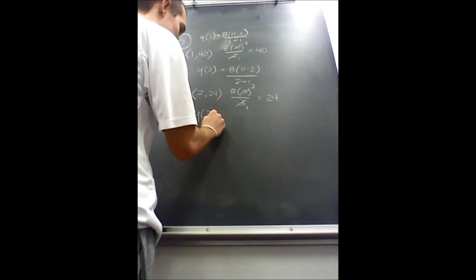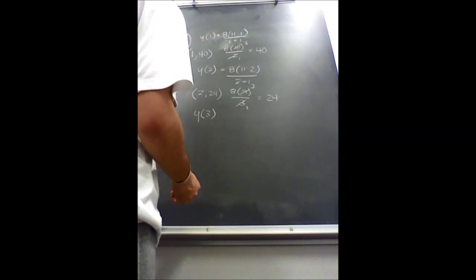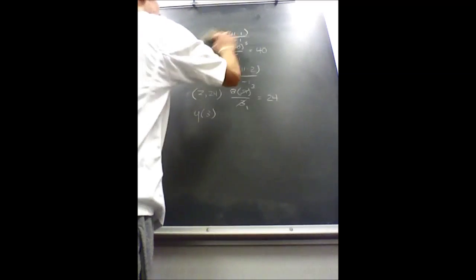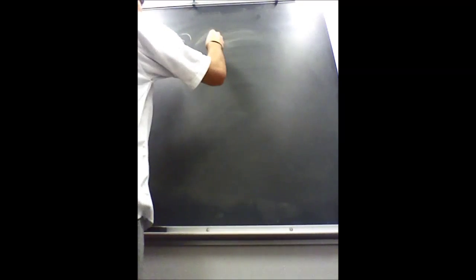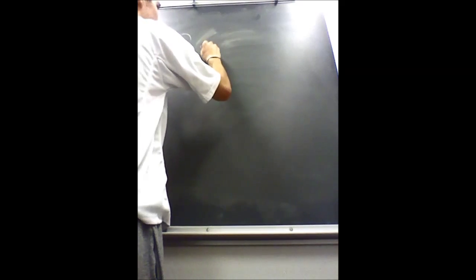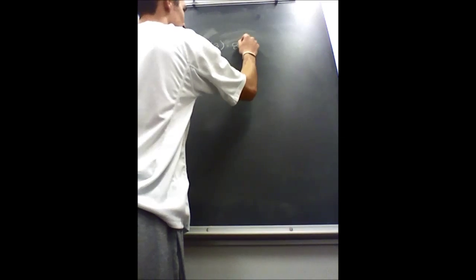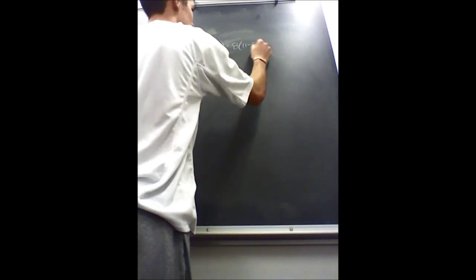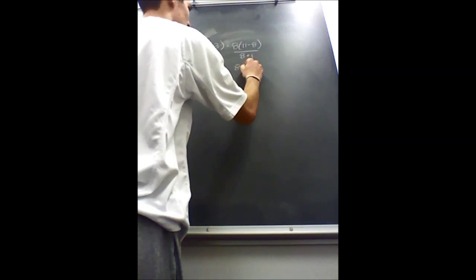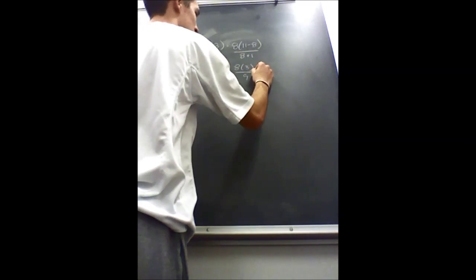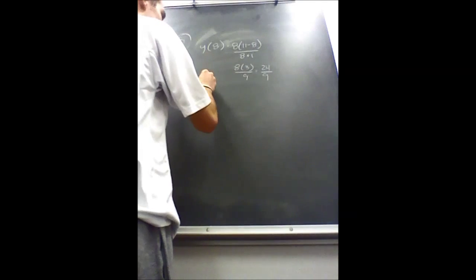You continue doing this until you don't get an integer as your answer. Y of 8 equals 8 times 11 minus 8 over 8 plus 1. That turns into 8 times 3 over 9, which is 24 over 9, which is not an integer. So 8 does not work.